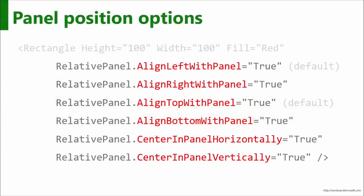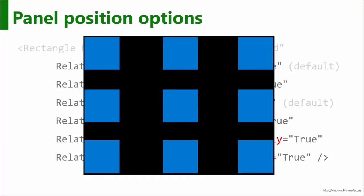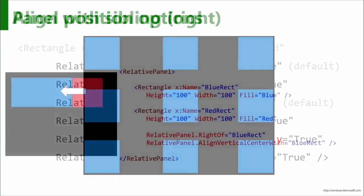Here are all the ways you can position with the panel. You can align the left of the object with the panel, the right, top, bottom, and then two centered alignments as well. So there are nine places you can put it by default, and then you can start to nudge those around with other properties as well.